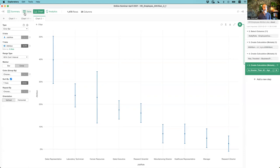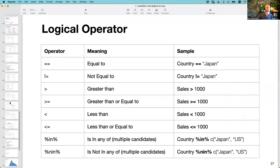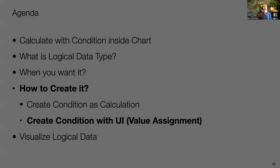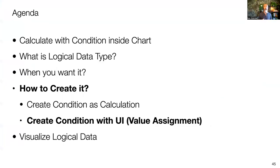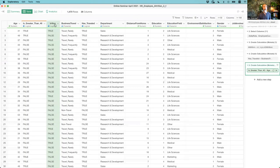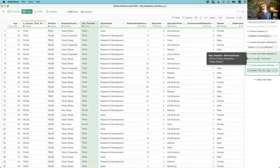There's another way to create logical data besides using calculations — using the UI completely. From the column header menu, choose 'Create Calculation with Condition' or 'Replace Values with Condition', which opens the Conditional Value Assignment dialog. Before creating a condition, note the return value type — in this case, I want to return true or false, so I select 'logical'. This also validates that whatever the calculation returns will be true or false, otherwise you'll get an error message.